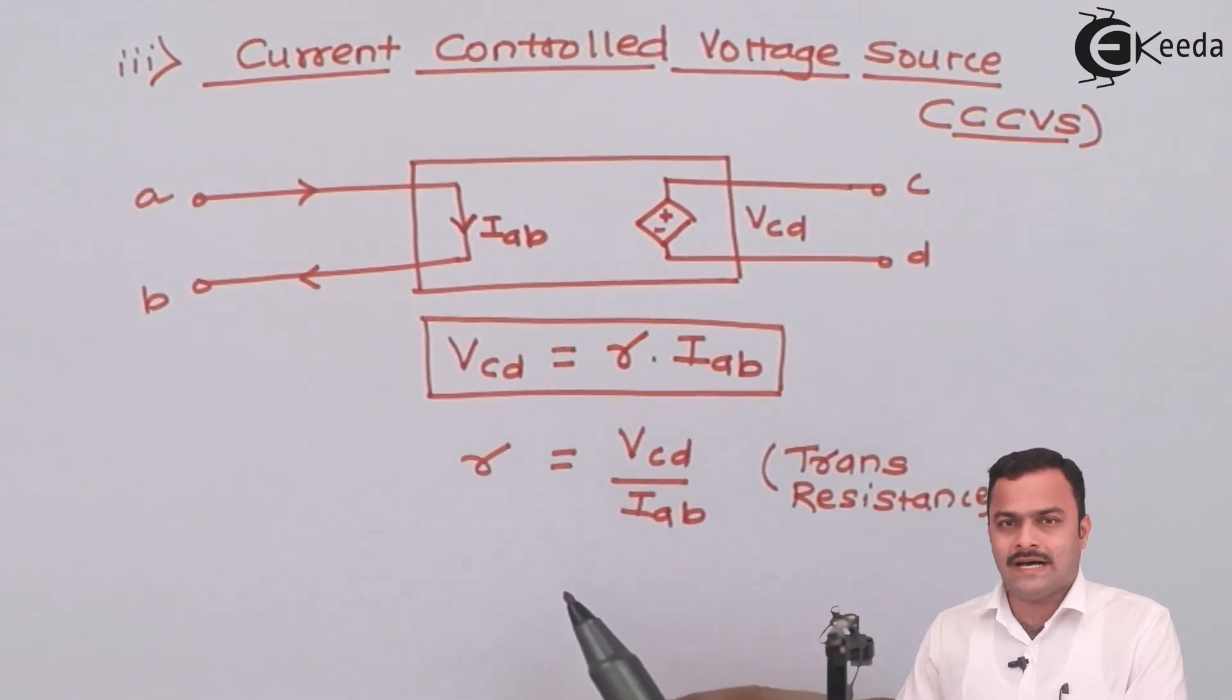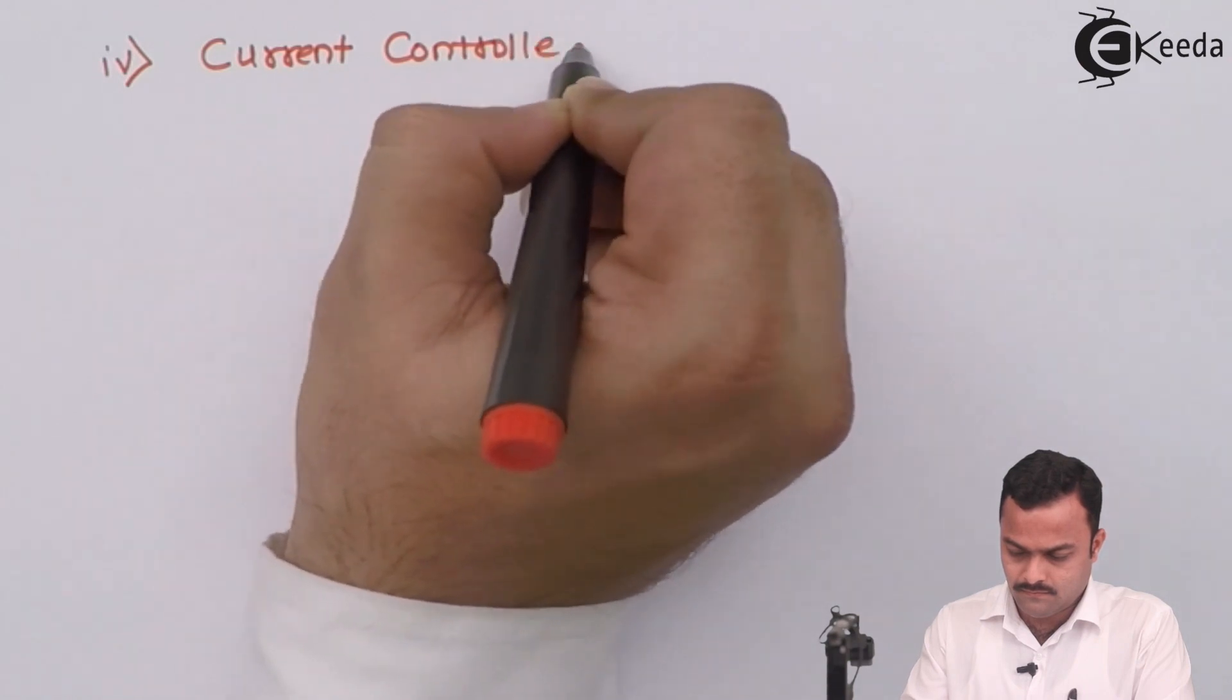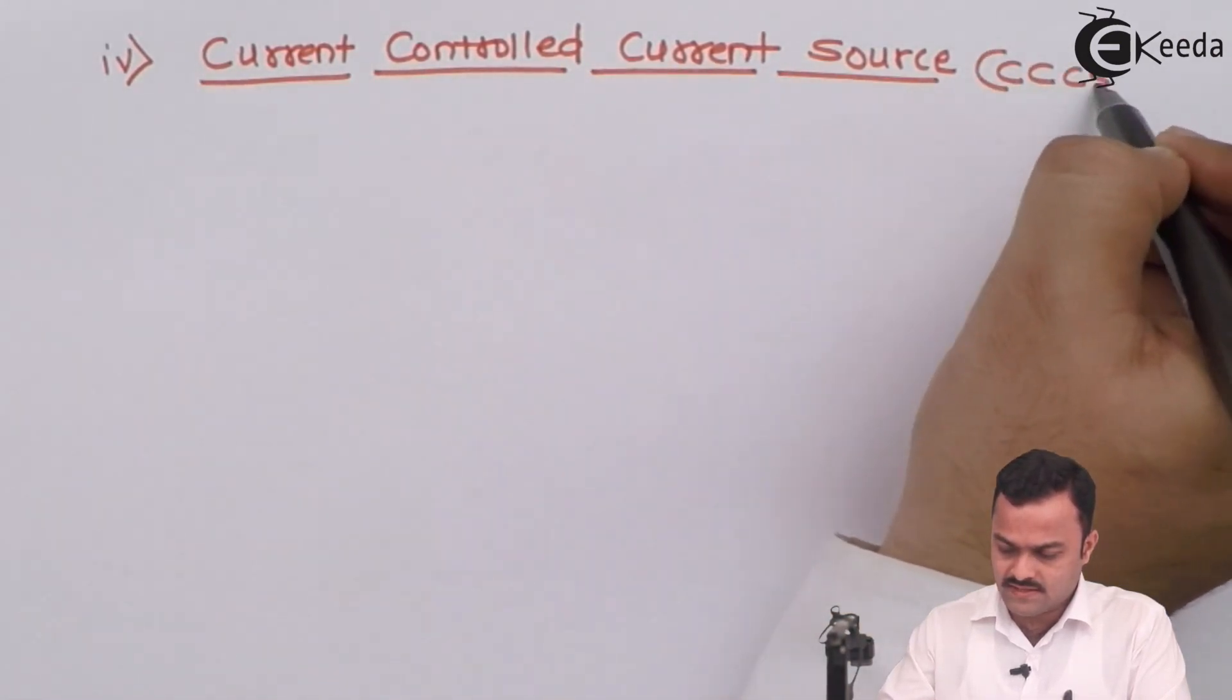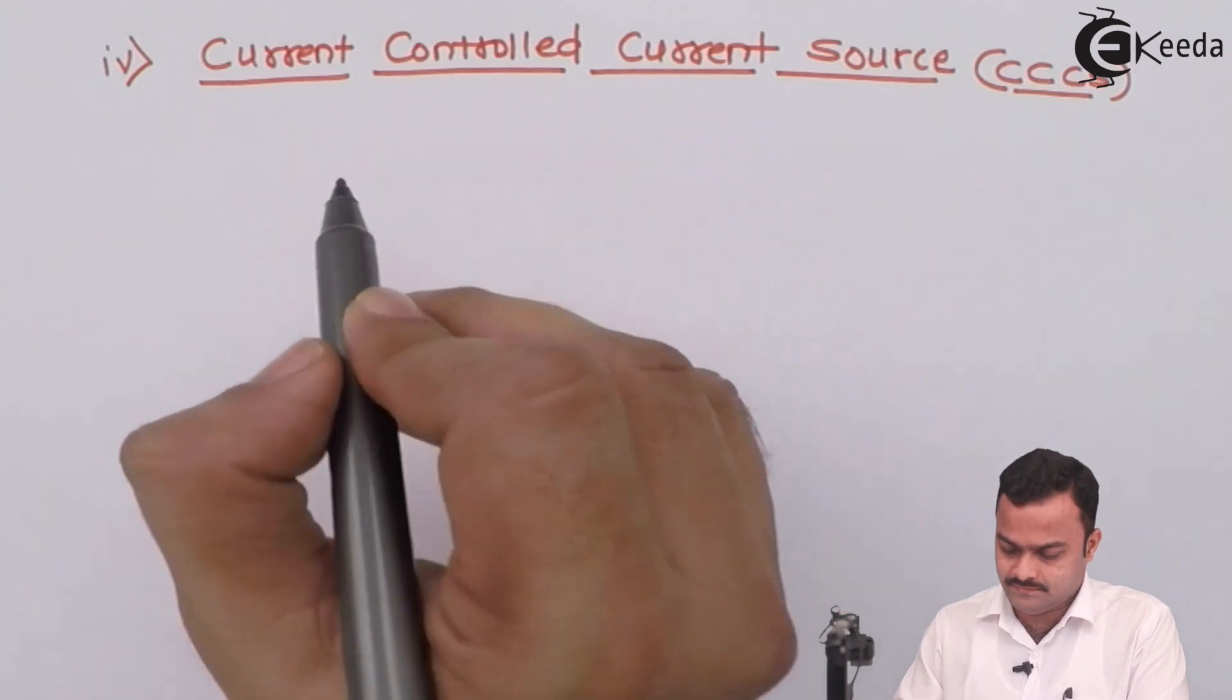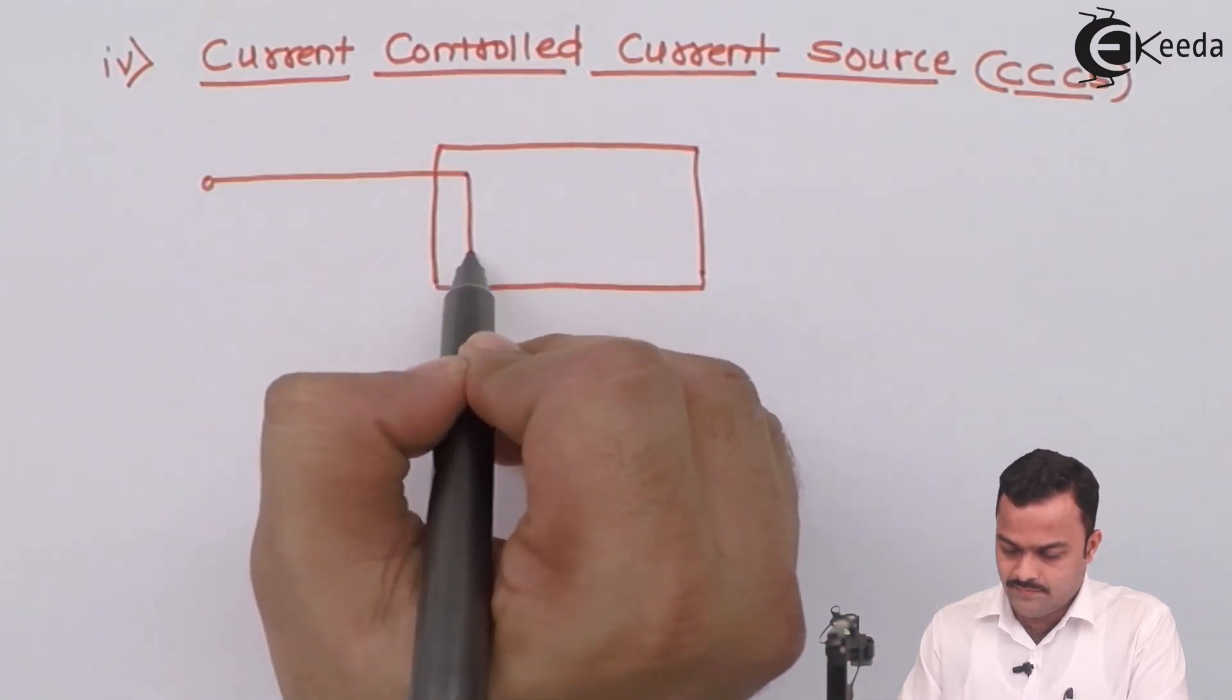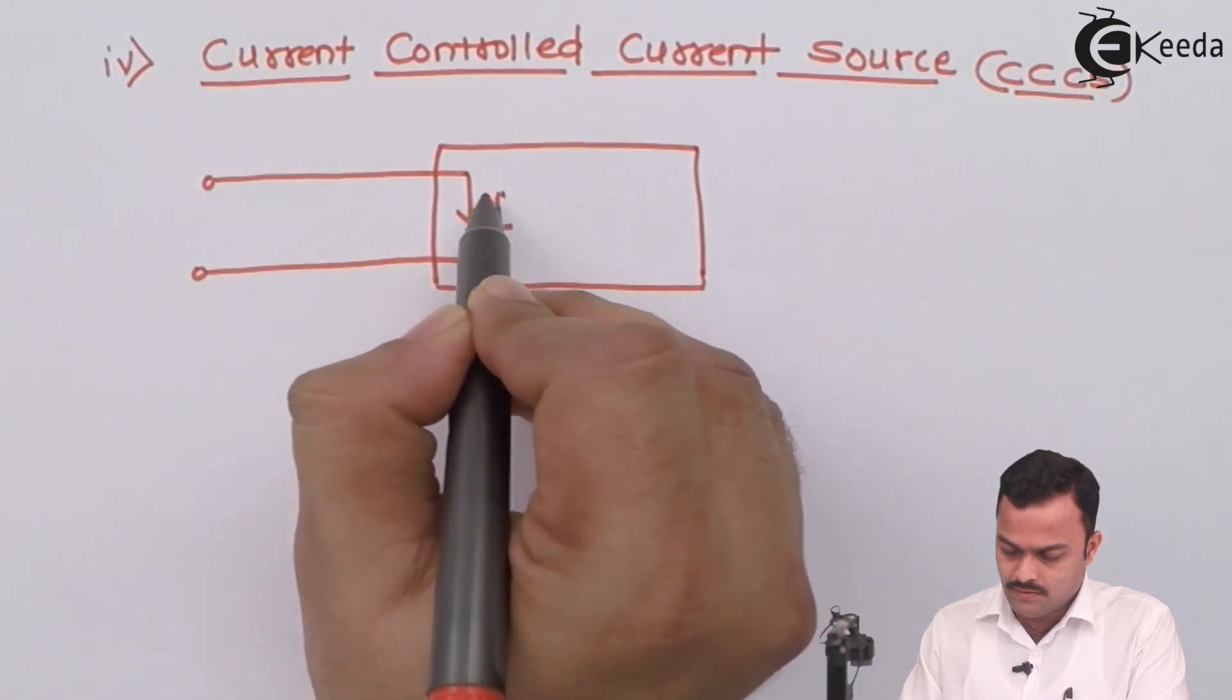And finally we come to the last classification. That is current controlled current source, that can be considered as CCCS. As the name suggests, both the sides will have current. So in the input side we have current IAB which will control output side current ICD.